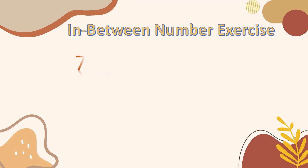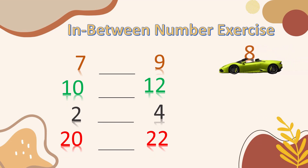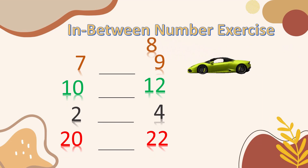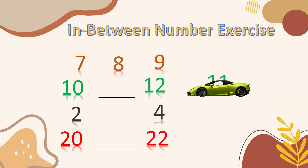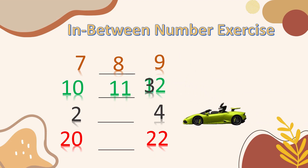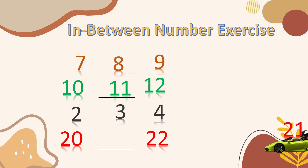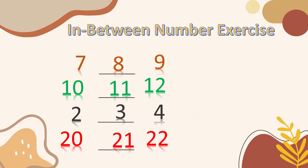What comes between 7 and 9? What comes between 10 and 12? What comes between 2 and 4? What comes between 20 and 22? 7, 8, 9 — so 8 is the in between number. 10, 11, 12 — so 11 is the in between number. 2, 3, 4 — so 3 is the in between number. 20, 21, 22 — so 21 is the middle number.